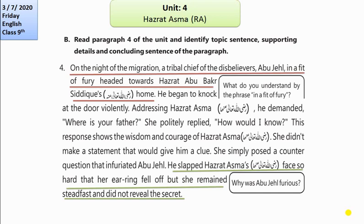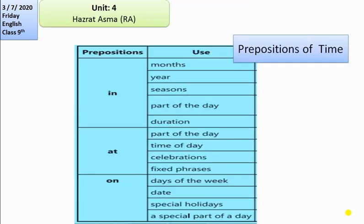The concluding sentence is: 'He slapped Hazrat Asma (R.A.)'s face so hard that her earring fell off, but she remained steadfast and did not reveal the secret.' This is the concluding sentence. I hope it's clear to you all. Now let's move to our next topic, which is preposition of time.